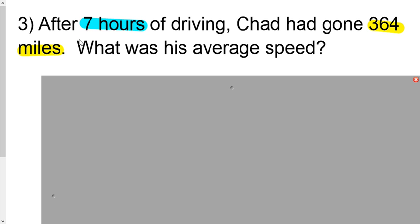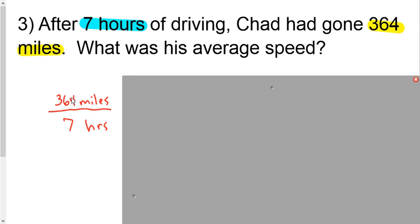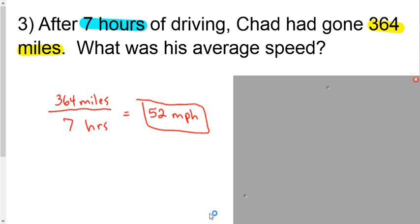They just tried to give you the time element before they gave you the distance. But we're still going to hold true to put your distance on top, 364 miles, and put your time on the bottom, which is 7 hours. After you divide it, you get 52 miles per hour.